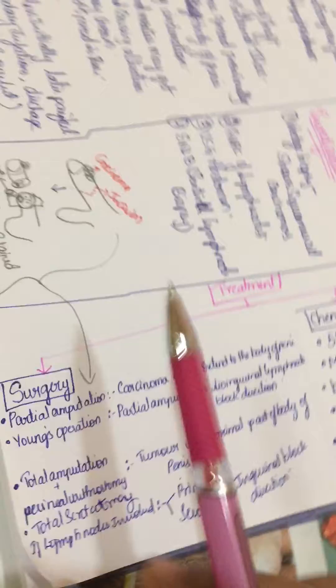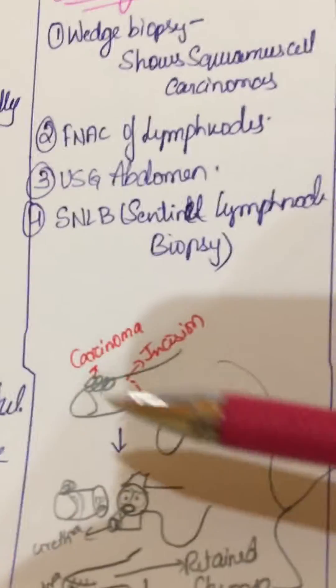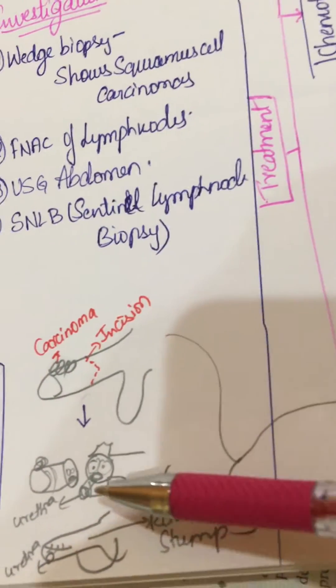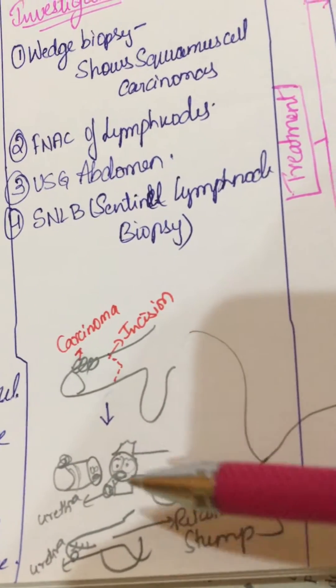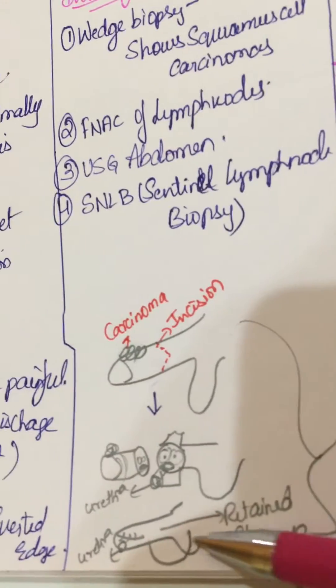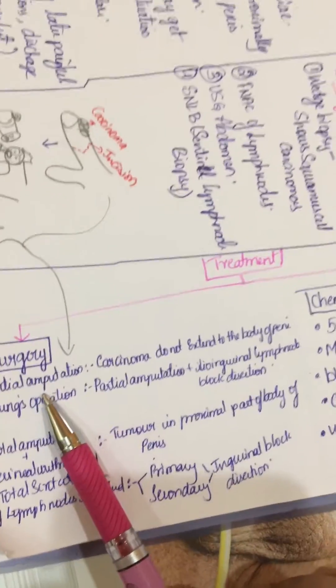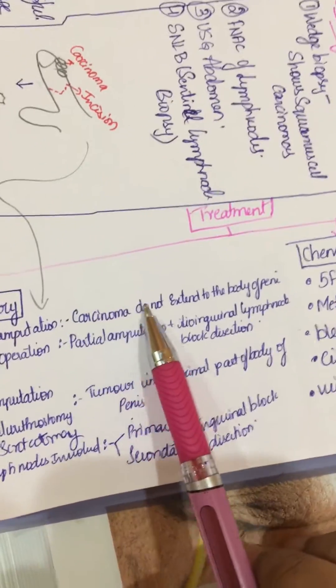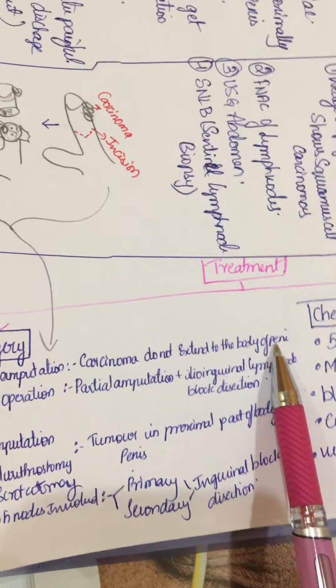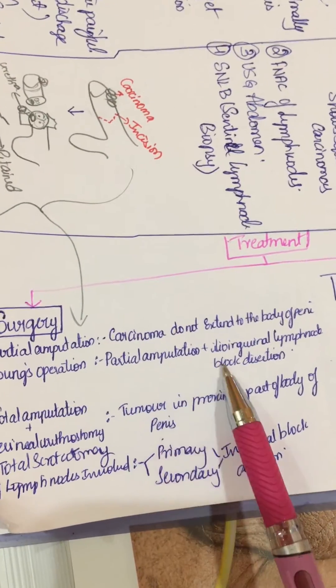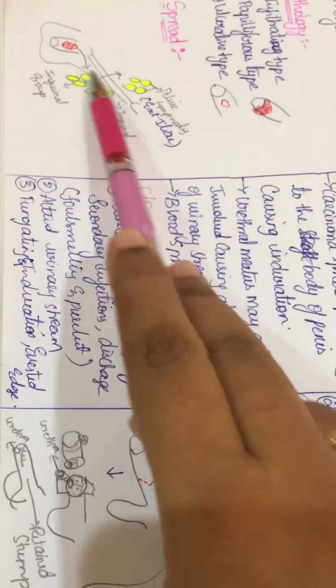Treatment - surgery: partial amputation of the carcinoma of the penis is done; the urethra is retained and fixed to the retained stump. Partial amputation in carcinoma should not extend to the body of the penis. Young's operation involves partial amputation plus inguinal lymph node dissection.